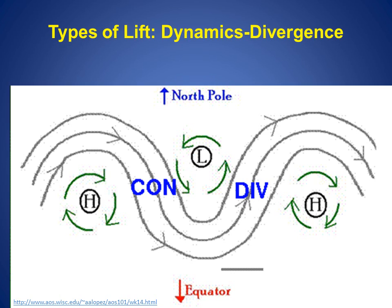Conversely, on the east side of the trough, we typically see divergence of air aloft, as shown by the blue DIV, where more air leaves or is spread out from the area. This divergence in the upper levels of the atmosphere leads to rising motion and cloudy and stormy weather. An example of how divergence aloft leads to lift is shown in more detail in the next slide.